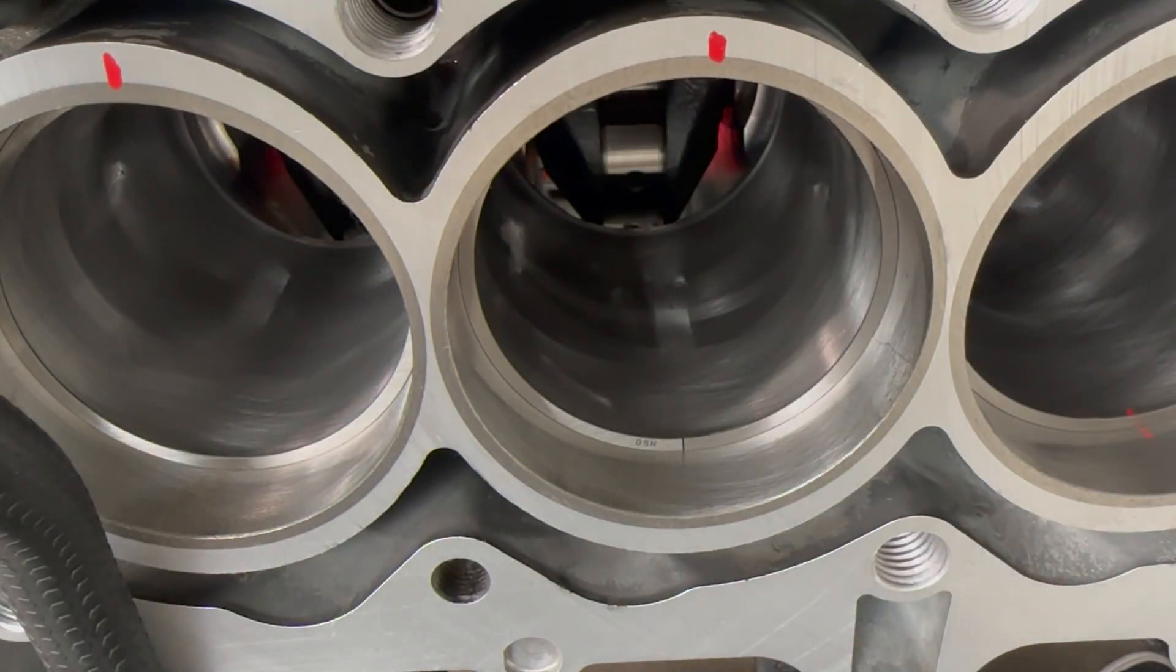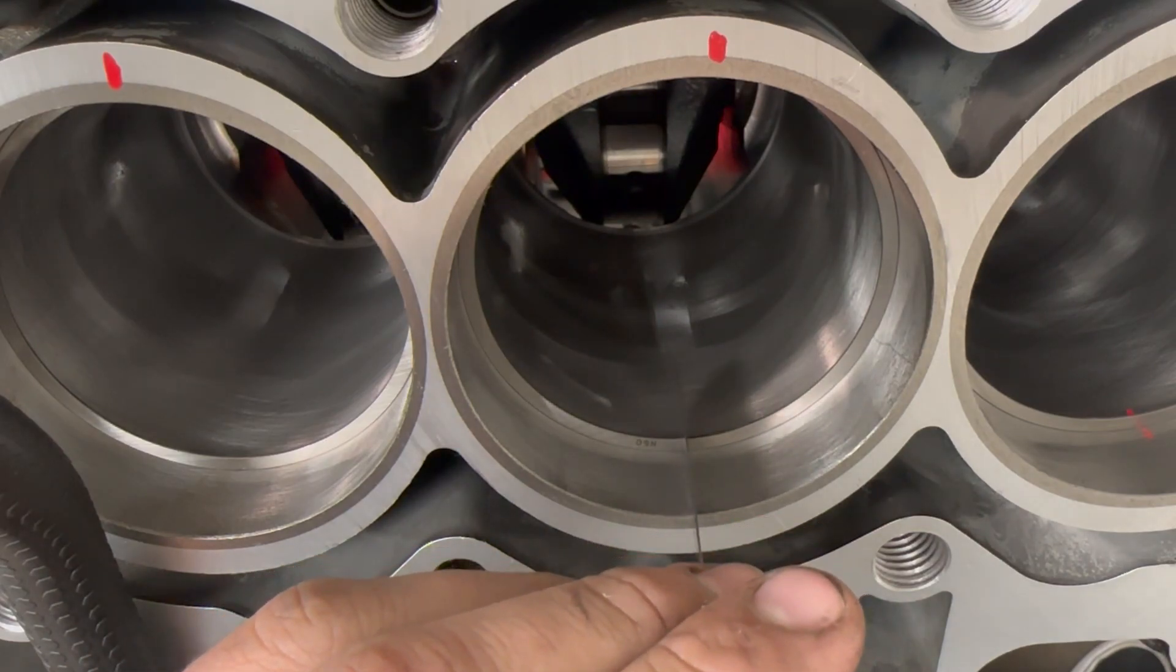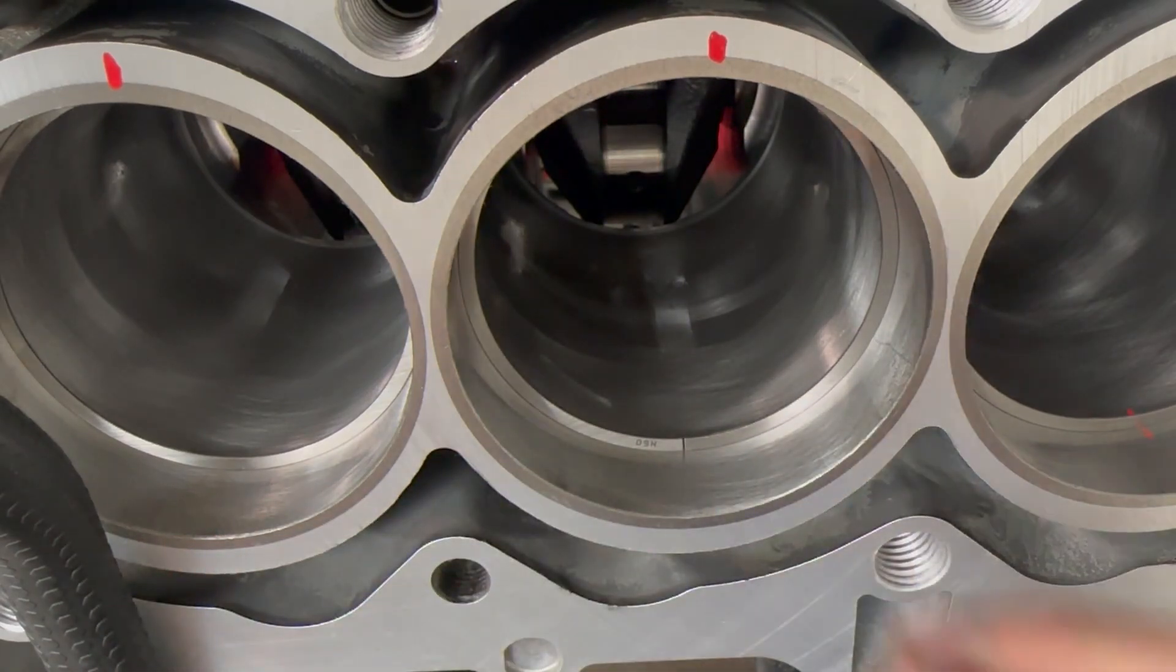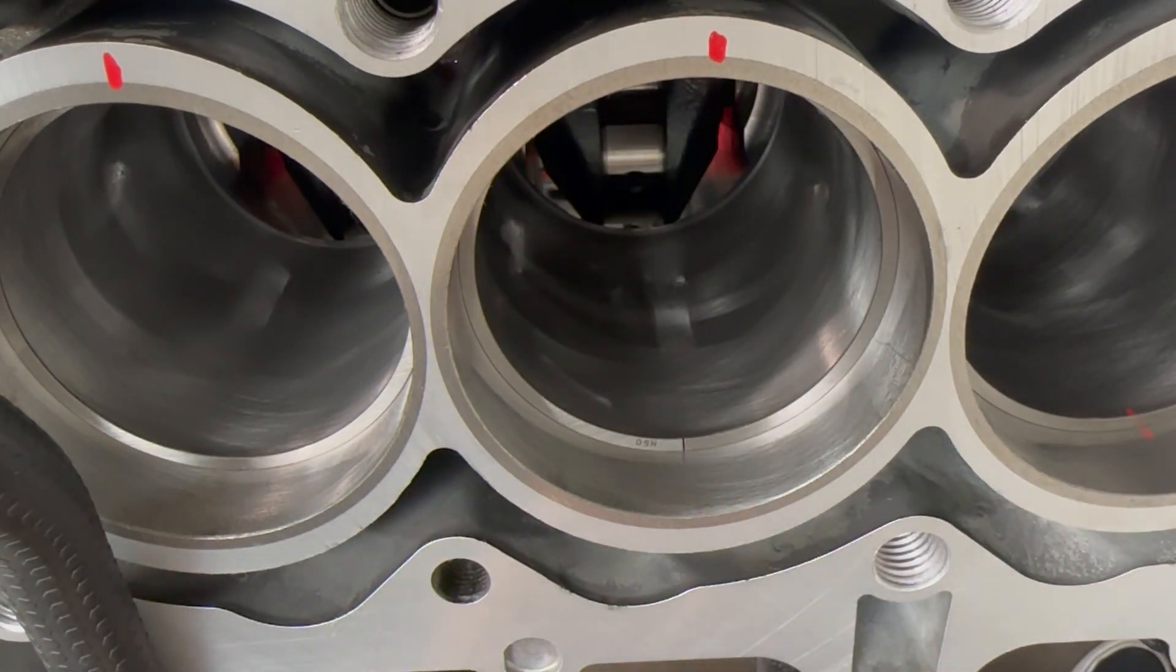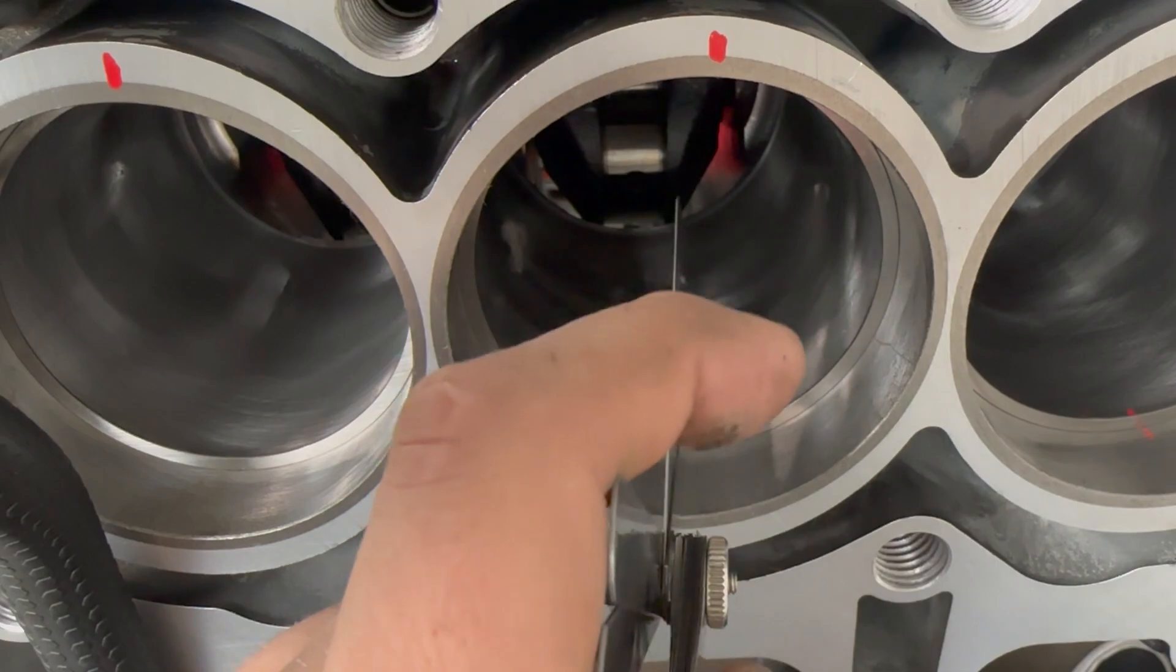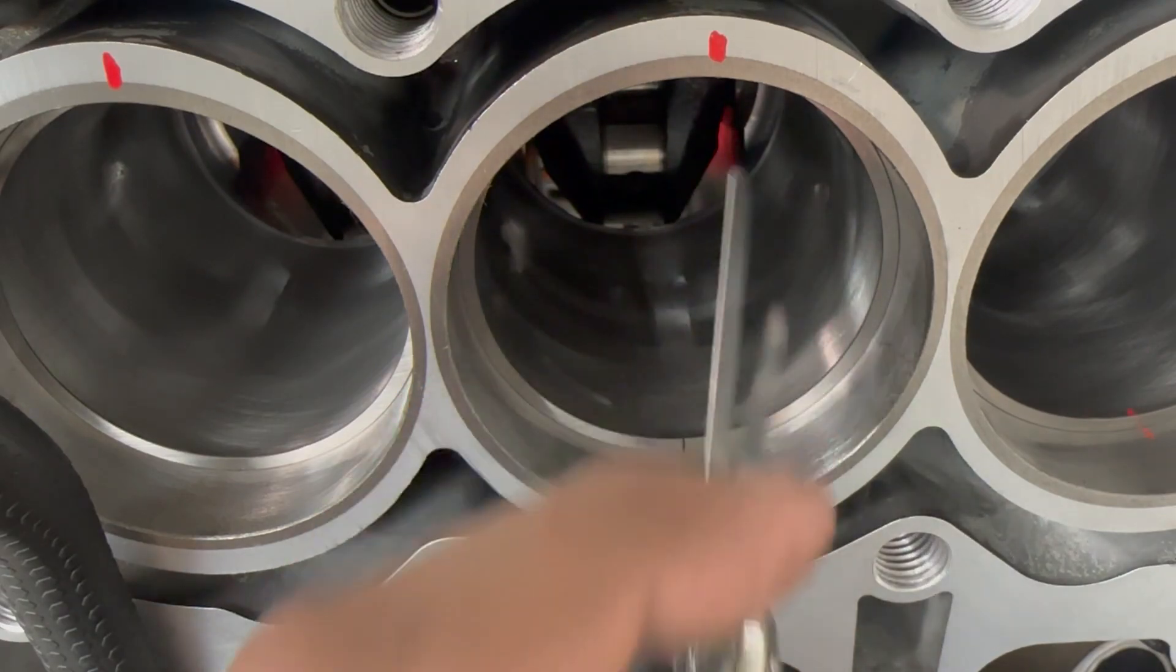I am going to start with 18 and see if the 18 goes in. All right so 18 fits nice, feel a little bit of drag on it which is good. Make sure that that doesn't separate so you get the most accurate reading possible. Now I'm gonna go to 19 see if 19 fits. 19 does not fit, you see that, so we are right at 18 thousandths on this one.